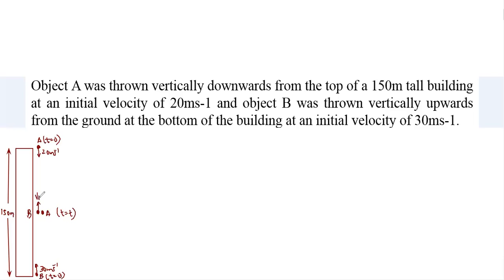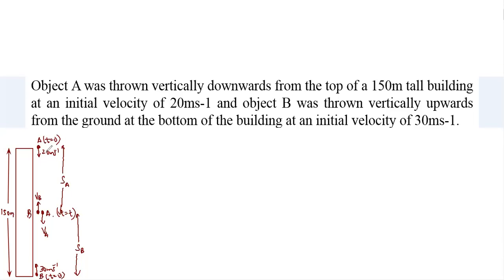The velocity of b will be like this and velocity of a will be like this. We consider the displacements: sA is the displacement of A, and sB is the displacement of B, the distance B has traveled vertically upwards. The approach to this question: one connection we can make is when you add sA and sB it should be equal to 150.